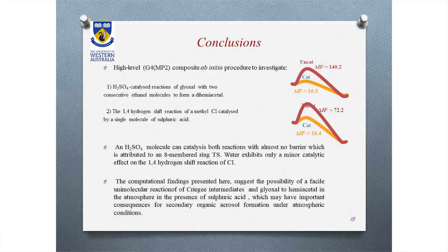In summary, we used the high-level G4MP2 protocol to calculate two reaction mechanisms catalyzed by sulfuric acid: one was the formation of hemiacetal from glyoxal and ethanol, and the other was the 1,4-hydrogen shift for the Criegee intermediate. The results show that sulfuric acid can catalyze these reactions with almost no barrier, while water exhibits only a minor catalytic effect. These computational findings may have important consequences for the formation of secondary organic aerosols in the atmosphere.